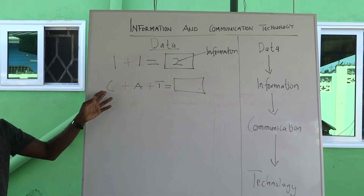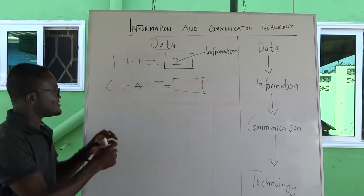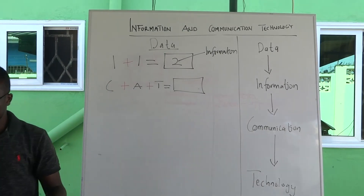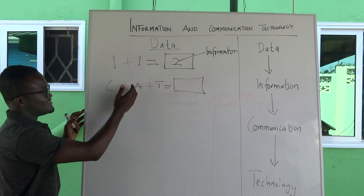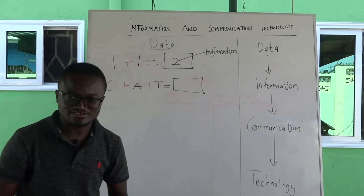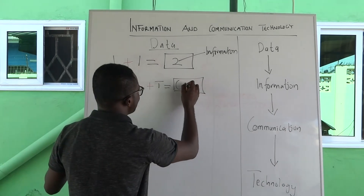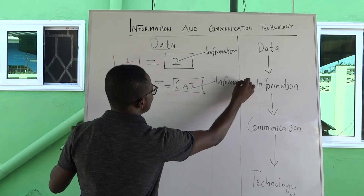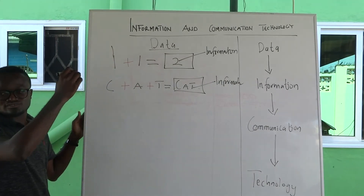Here we have C plus A plus T. When I tell you to explain C plus A plus T on its own, you won't be able to. But when we add the C, A, and T together, the answer we get is 'cat'. The cat here also represents what you call information, while the individual letters — C, A, and T — used to represent what you call data.